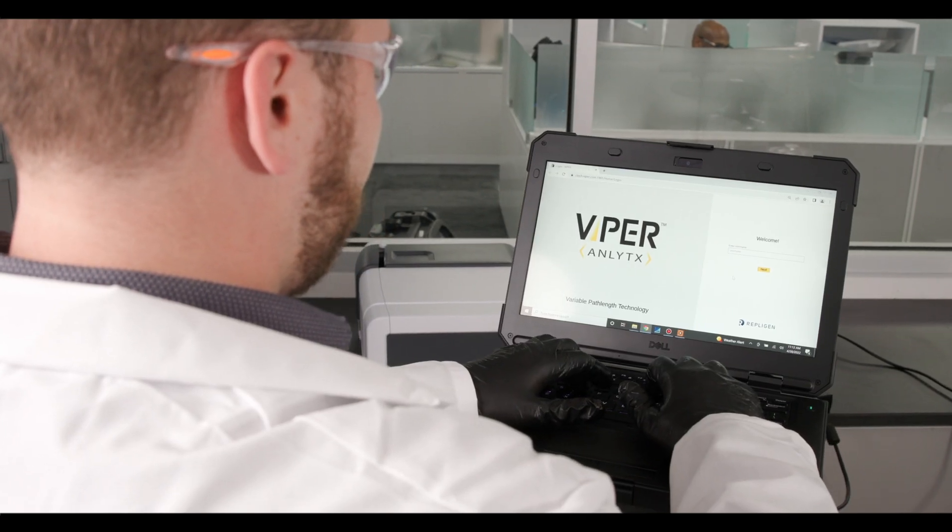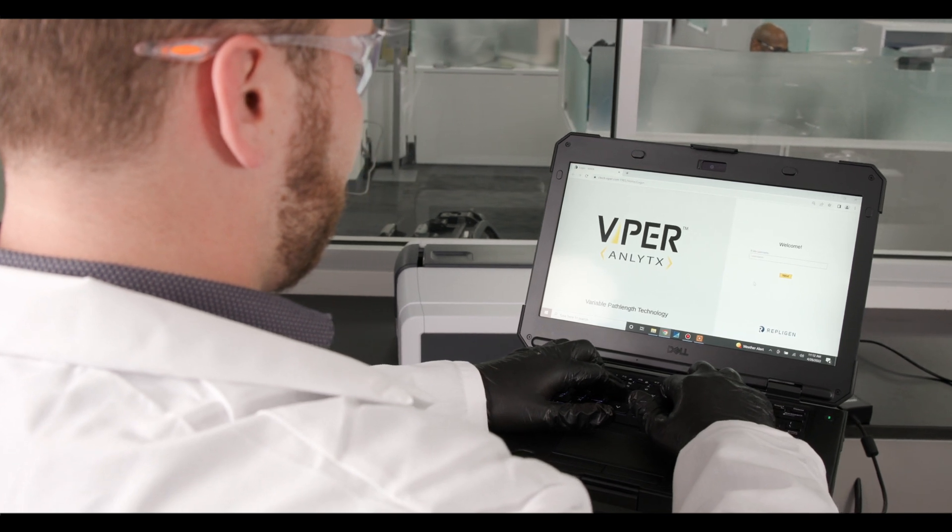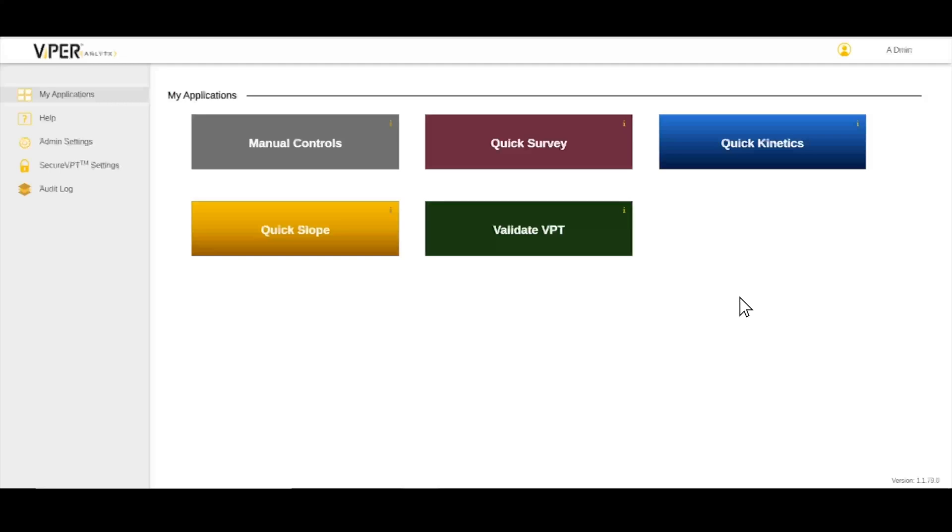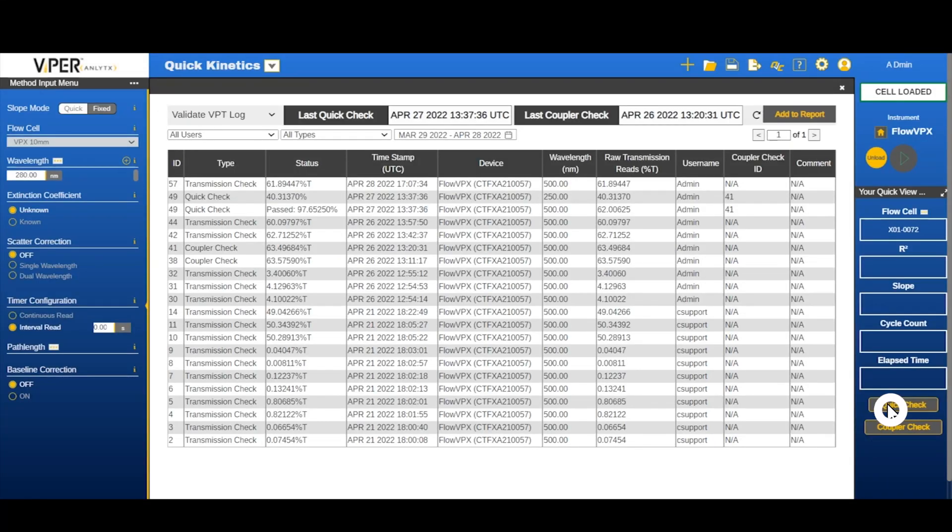If you're planning on performing another run with the same flow cell, initiate the manual transmission check. To perform the manual transmission check, navigate to quick kinetics within the software. Click quick check on the instrument control to start the quick check process.